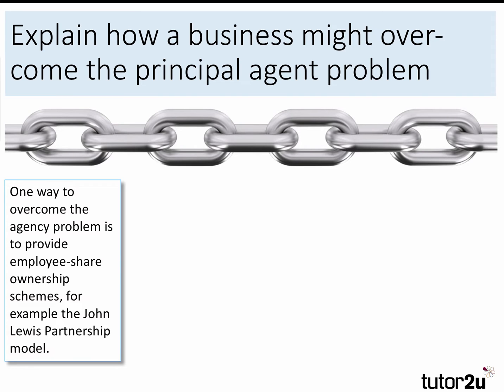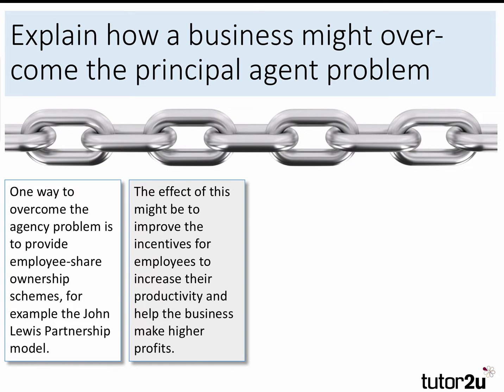One way to overcome the agency problem — linking back to the question — is to provide employee share ownership schemes. For example, the John Lewis partnership model. The effect of this might be to improve the incentives for employees, including managers, to increase their productivity and help the business make higher profits. So here we have two links in a chain: you're making your point with a good example, and then linking to theory about improving incentives, putting in concepts such as productivity and profit to add substance.